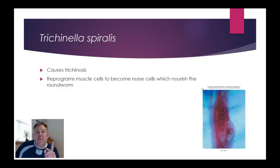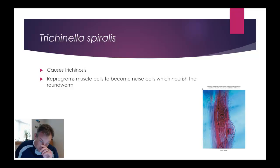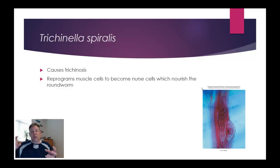Another nematode you may be familiar with is Trichinella, which causes trichinosis. You commonly get this from eating undercooked meat — undercooked pork especially. The infected organism's muscle cells get reprogrammed and actually manipulated so that they stop functioning normally and instead turn into a cell to nourish the nematode. Pretty interesting.